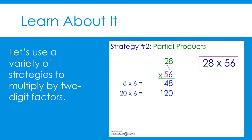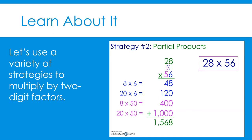Next, we will multiply 28 by 50. First, let's multiply 8 by 50 — we are multiplying by 50 and not by 5, because the 5 is in the tens place, so it has a value of 50. 8 times 50 equals 400. Finally, we will multiply the two tens places together. 20 times 50 equals 1,000. The order of the partial products does not matter, as long as you are multiplying the correct numbers together. Now, we will add up our partial products. These are the same partial products that we found in our area model.